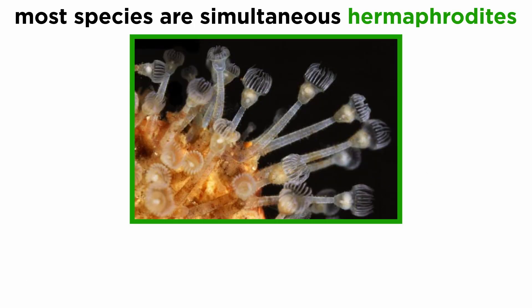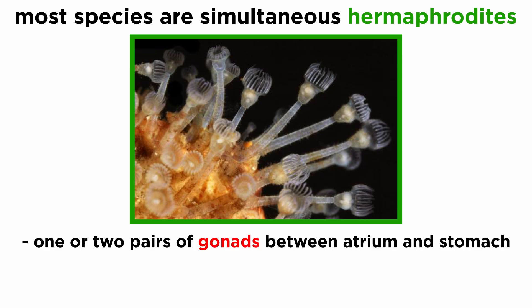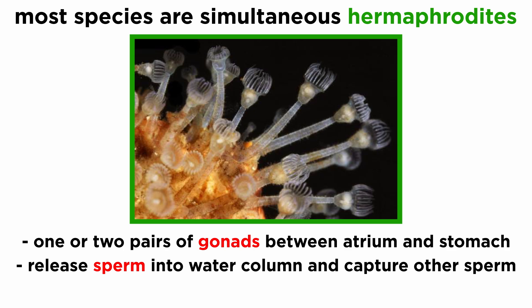For sexual reproduction, most species are simultaneous hermaphrodites, meaning they are both male and female at the same time, but some switch from male to female as they mature, while individuals of other species remain the same sex all their lives. Individuals have one or two pairs of gonads placed between the atrium and stomach, and opening into a single gonopore in the atrium. Most species release sperm into the water column and then capture sperm of other individuals of the same species in order to internally fertilize their eggs within their ovaries.